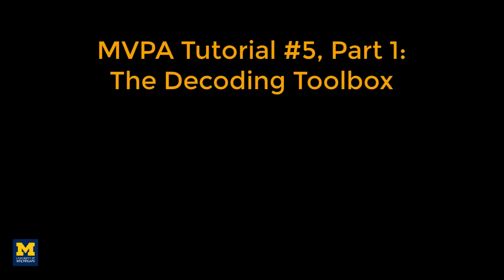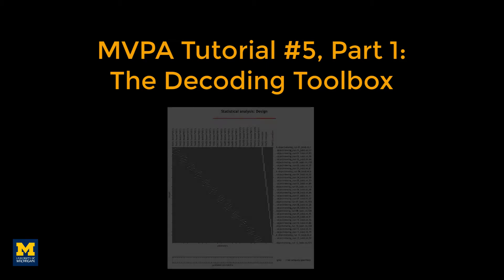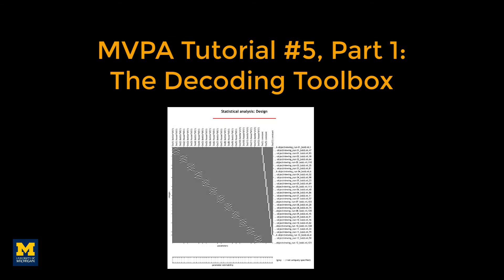Having generated beta maps for this subject — one per condition for each run — we are now ready to run a multivariate pattern analysis, using the beta maps as both training and testing data.